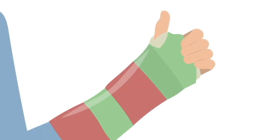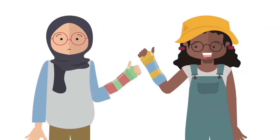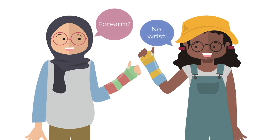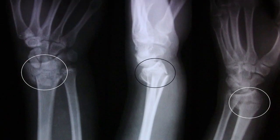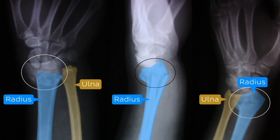Ever ended up with one of these? I hope not, but chances are that you actually have, or at least know someone who has experienced what many people might refer to as a broken wrist. But did you know that more often than not, injuries like this are actually isolated to the bones of the forearm rather than the wrist itself?